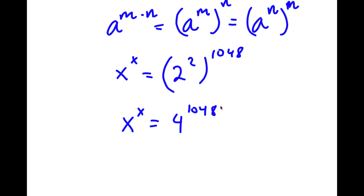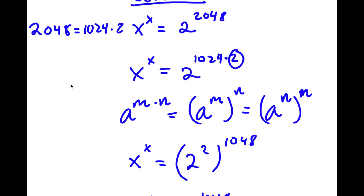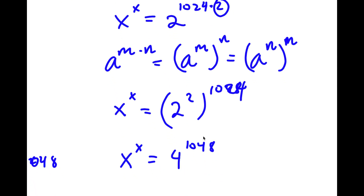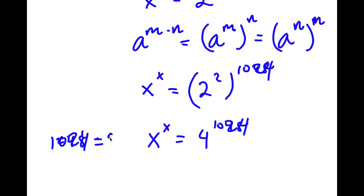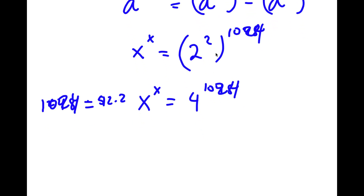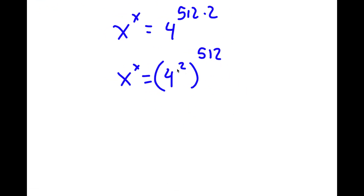I'm going to repeat the same process. 1024 equals 512 times 2, so I have x to the power of x equal to 4 to the power of 512 times 2. I rewrite that as 4 to the power of 2, to the power of 512. Since 4 to the power of 2 is 16, I now have x to the power of x is equal to 16 to the power of 512.